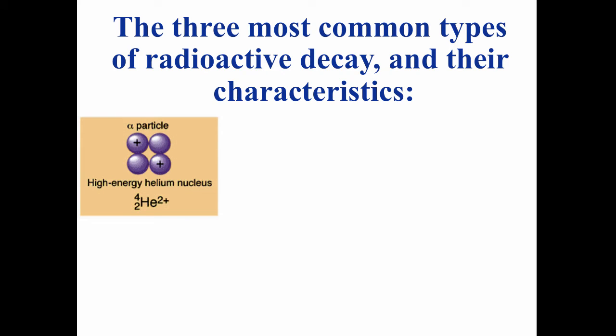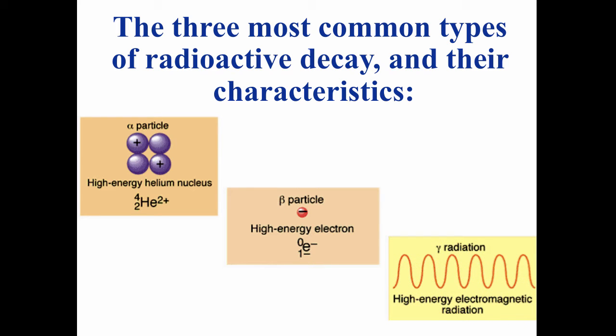Alpha decay is the emission of a high-energy helium nucleus—two protons and two neutrons. Beta decay is the emission of a high-energy electron, known as a beta particle. And then gamma radiation is not actually a particle. It's high-energy electromagnetic waves, higher energy even than x-rays.